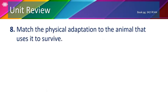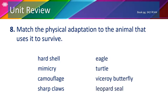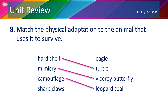In number 8, we are going to match the physical adaptation to the animal that uses it to survive. The adaptations are hard shell, mimicry, camouflage, and sharp claws. The animals are eagle, turtle, viceroy butterfly, and leopard seal. Which of these animals has a hard shell? That's right — the turtle. Mimicry is when an animal copies another animal to stay safe, just like what a viceroy butterfly does. Camouflage is when an animal blends into its environment, like a leopard seal. And finally, the sharp claws that an eagle has help it catch its prey.